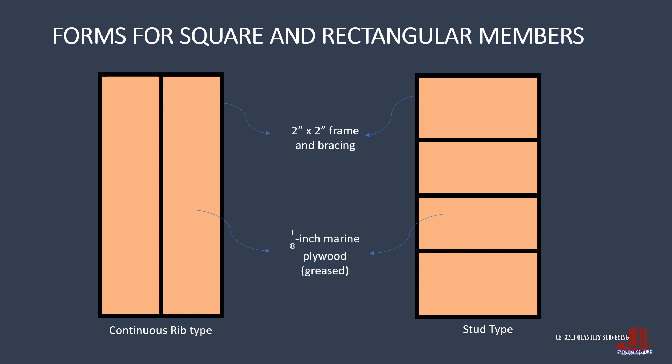In terms of assembly, the continuous rib type is faster to make as the long middle brace only needs to be hammered on two ends. However, it requires a longer bracing length. In construction, as these are temporary members, scrap lumber is commonly used to maximize it, so the stud type is assembled, although it requires more connections.